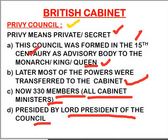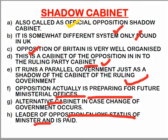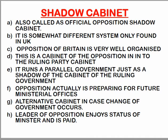So the king's own council gradually had its powers transferred to the British cabinet. Now, a very important concept is the Shadow Cabinet — it is a somewhat unique concept. It is also called the official opposition shadow cabinet. The cabinet has a Home Minister, so there is a shadow Home Minister. There is a Prime Minister, so there is a shadow Prime Minister. For every portfolio in the ruling government, a parallel shadow cabinet is formed, so that if the government falls, it can immediately take over. This system is found only in the UK.